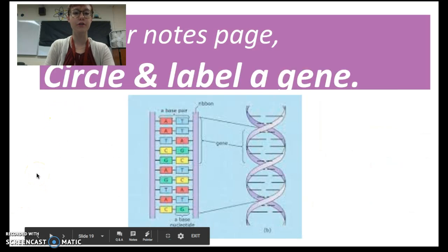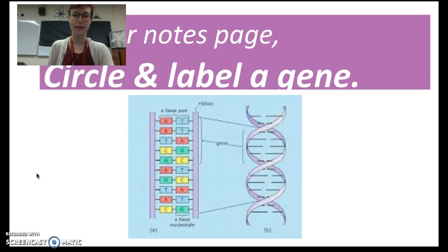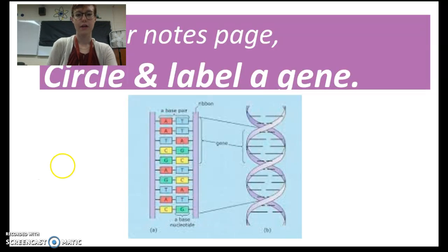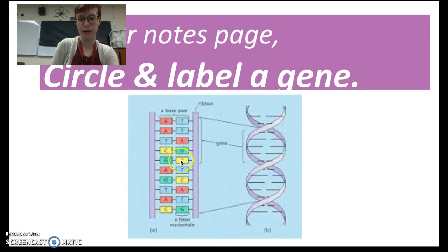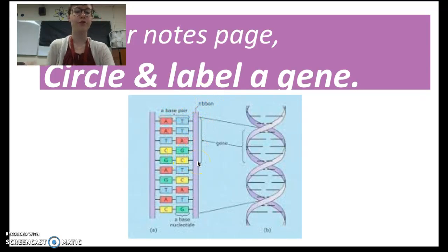On your notes page, with that same DNA diagram, you need to circle one gene. You can see an example right here — one gene has been circled. Use that as an example to help you circle a gene on your notes page.